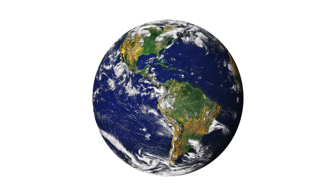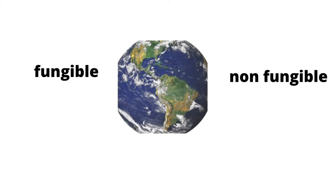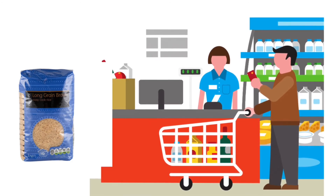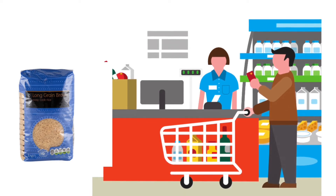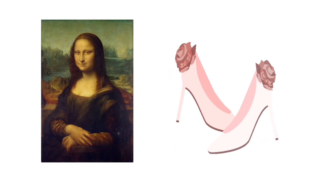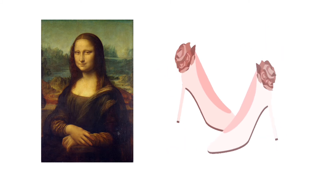So everything in this world is either one or the other — some things are replaceable and some are not. Another example: when you go to the supermarket and want a bag of rice, you see lots of rice, same bag, same colour, same type. You can easily grab one today, come back tomorrow and grab another, and it's going to taste the same. That means rice is fungible. But the Mona Lisa painting or my shoes — you can't just walk to a supermarket and get them. Even if you try to paint the same thing or get the same shoe, it's not the original copy.